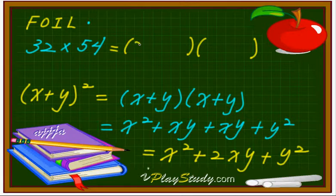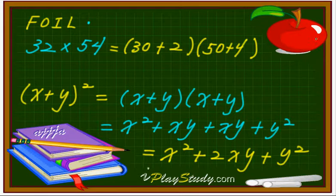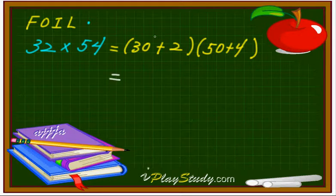32 means what? That's right. 30 plus 2. Now, 54. That means 50 plus 4. Great. Now, all we have to do is just solve this one. In foil technique. 32 means 30 plus 2. 54 means 50 plus 4.